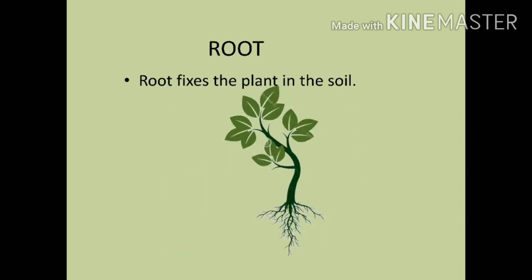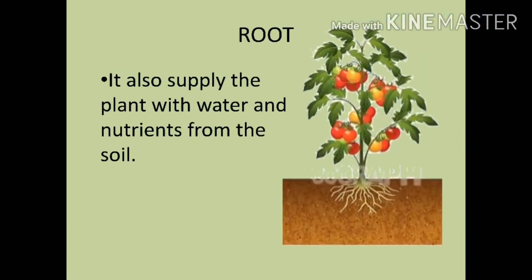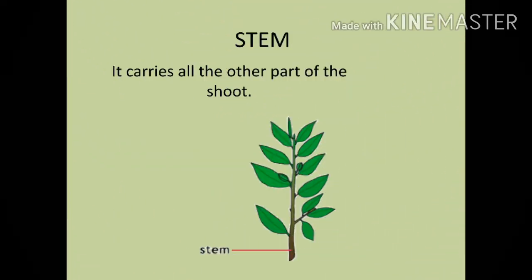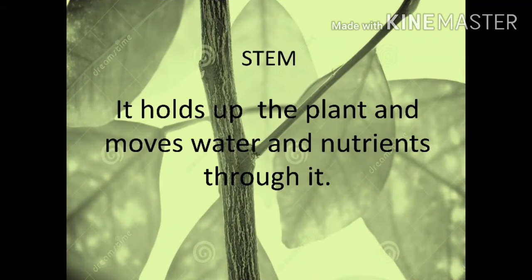A root fixes the plant in the soil. It also supplies the plant with water and nutrients from the soil. The stem carries all the other parts of the shoot. It holds up the plant and moves water and nutrients through it.